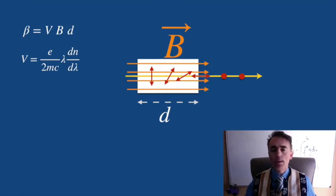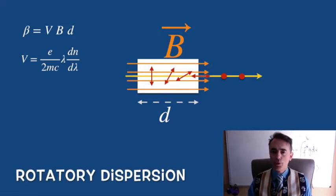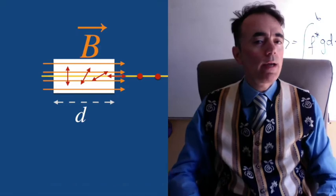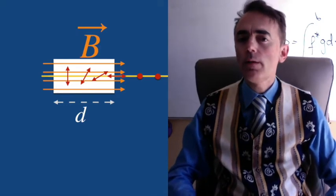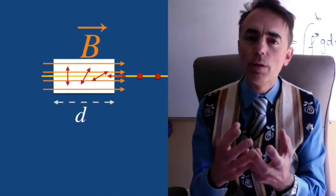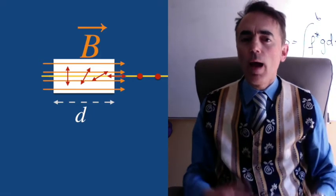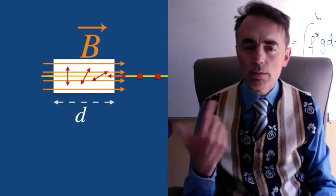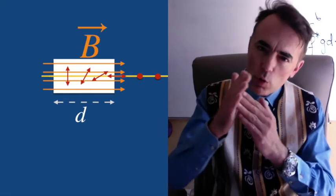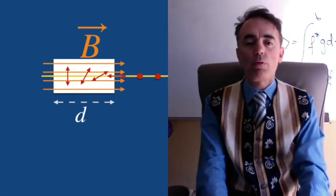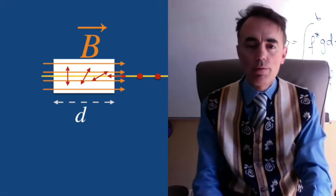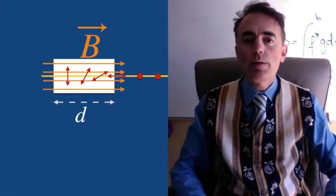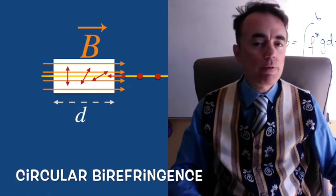Also known as the rotary dispersion, the Faraday effect comes from the interaction of the external magnetic field on the motion of the electrons in the atoms of that material. The electrons move around the atoms and the magnetic field exerts a torque on those electrons that affects the trajectories. This induces circular birefringence.